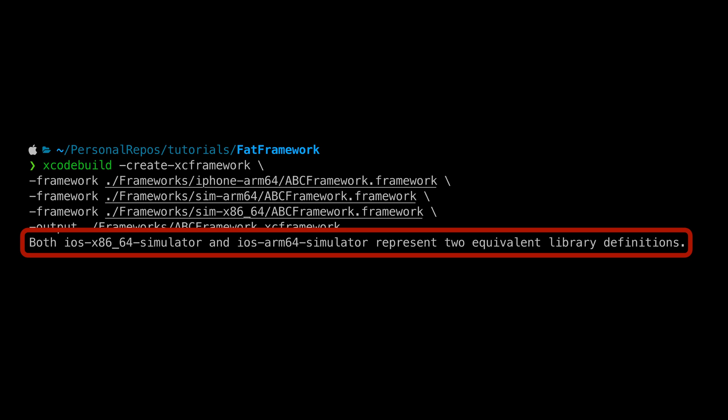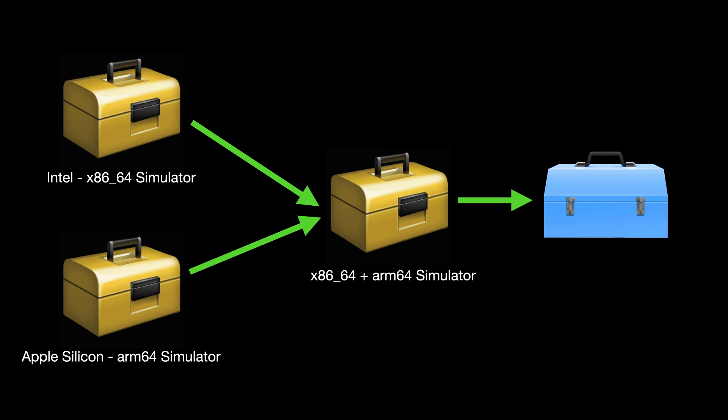The option I have is to create one XCFramework compatible with M1 and another for Intel — but that's not a good idea. What I need to do is combine these two simulator frameworks into one big fat simulator framework, combining x86-64 with ARM64, and then use it when creating the XCFramework.